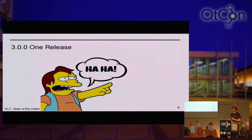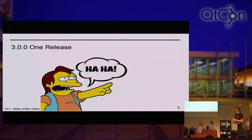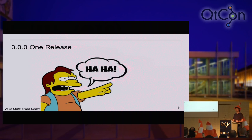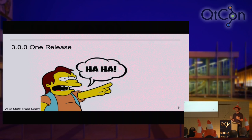The problem is that everyone is confused because the version of VLC on iOS is 2.7 or 2.8 something, the version on the desktop is 2.2.4, the one on Android is 2.0.6, and on UWP it's 2.0. No one understands anything about that — it's very bad. So with 3.0, this is going to be the first release where we're going to try to have one release on all platforms with the same number.